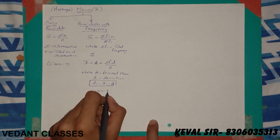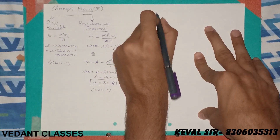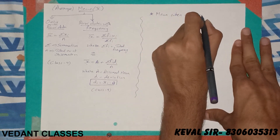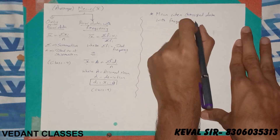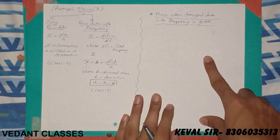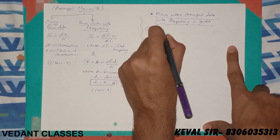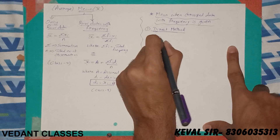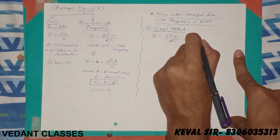Now let's see how we can calculate mean when grouped data with frequency is given. In class 10 there are three methods to calculate mean for such data. The first method is the Direct Method. The formula is: x-bar equals sigma fi·xi upon sigma fi, which can also be written as sigma fi·xi by n. Here, xi is the class mark — that is the mid-value of the given class — and sigma fi is the total frequency.